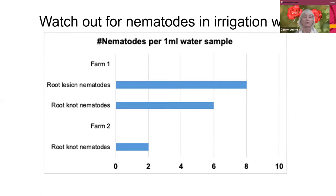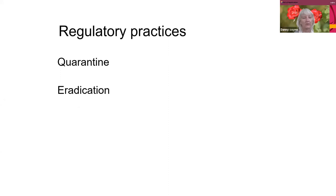That is actually how nematodes can come into hydroponics, as Danny mentioned. You wouldn't think you'd get nematodes in there, but if you have them in your irrigation water, they can come in that way. Regarding regulatory practices, Daisy will talk about this — there are rules and regulations by countries and internationally to prevent importing nematodes and to prevent spread within countries.